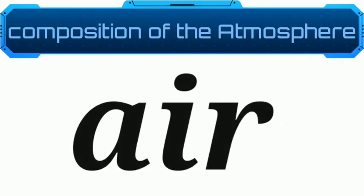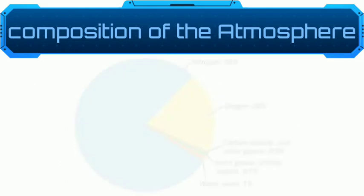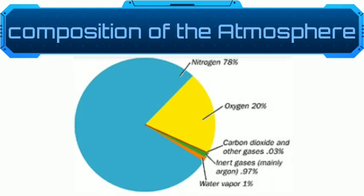Air, generally used as a synonym for atmosphere, is not a specific gas but a mixture of gases, mainly nitrogen and oxygen. Nitrogen amounts to nearly 78% of the volume of air, while oxygen makes up about 21%. The remaining 1% includes all other gases found in the atmosphere.